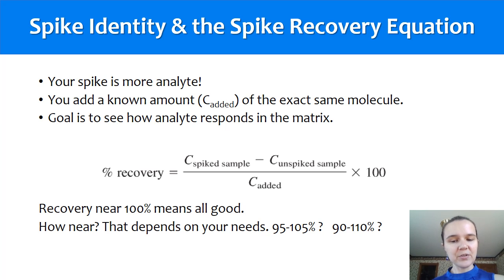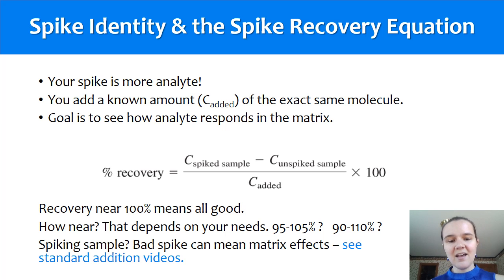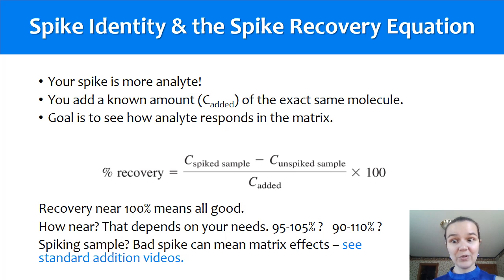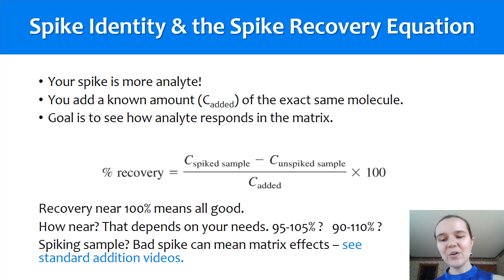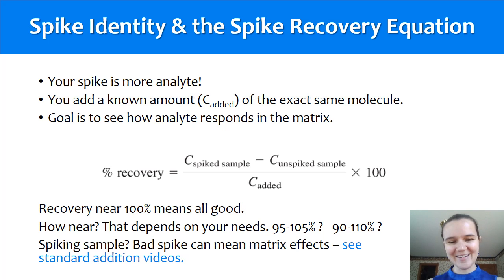How close? Well, there's always a little bit of room for error and it totally depends on your needs. Maybe five percent or ten percent off is okay — maybe less. If you're spiking a sample and you get a bad spike recovery — say more than 130%, or only five percent recovery — then you should look into standardization methods.